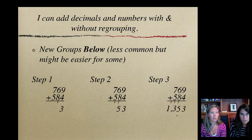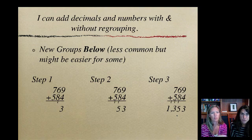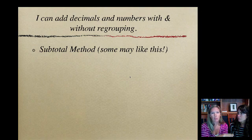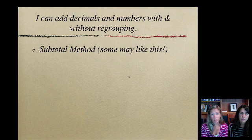So if you've done this right so far, you've got in your journal a label that says new groups above and an example problem. And then a label called new groups below and another example problem. And now, you're going to have another one that's called the subtotal method. Now, if you find that you are one of those people that putting those new groups above or below confuses you, and you're forgetting things, this method will work for you.